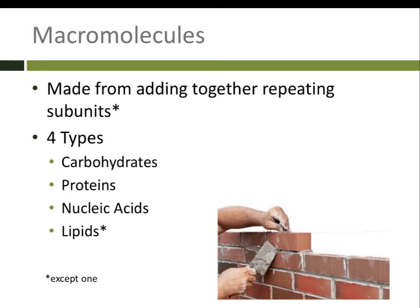Today we're going to be talking about macromolecules. You should have already watched the video on monomers and polymers and be ready to understand what those are. Macromolecules are what we make when we add lots and lots of monomers together to make large polymers. A macromolecule is a very large molecule. In the body we have four types of macromolecules: carbohydrates, proteins, nucleic acids, and lipids.